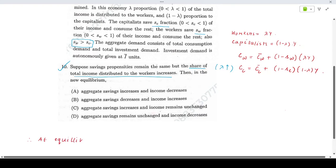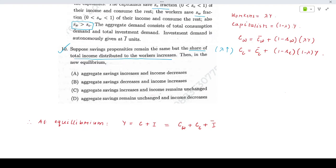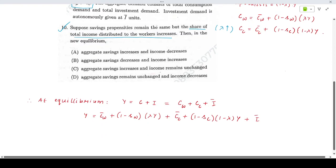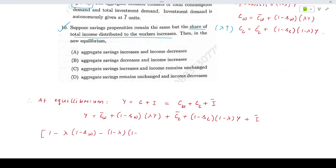Y would be the total consumption, which is the consumption by workers plus capitalists, plus investment which is autonomous. That means we can write Y equals CW bar plus 1 minus SW times lambda Y plus CC bar plus 1 minus SC times 1 minus lambda Y plus I bar. If we take all the Y terms together, that will become 1 minus lambda into 1 minus SW minus 1 minus lambda into 1 minus SC times Y equals CW bar plus CC bar plus I bar.